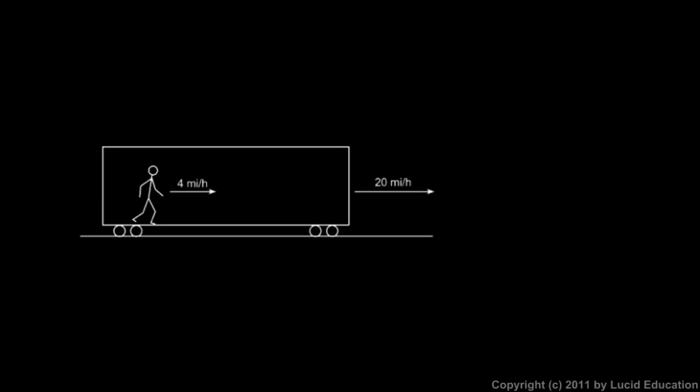Take a look at this picture. This is supposed to be a train car, and a person is on the train car walking forward. This arrow here represents the train moving forward at 20 miles per hour, and this arrow here represents the person walking forward at 4 miles per hour. So he's walking in the same direction the train is moving.